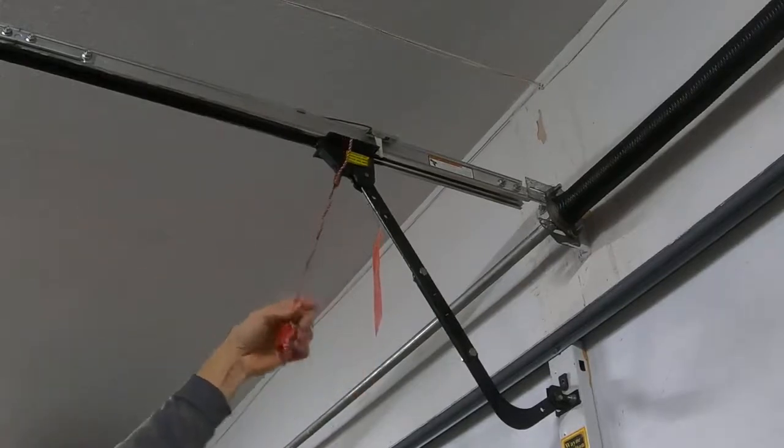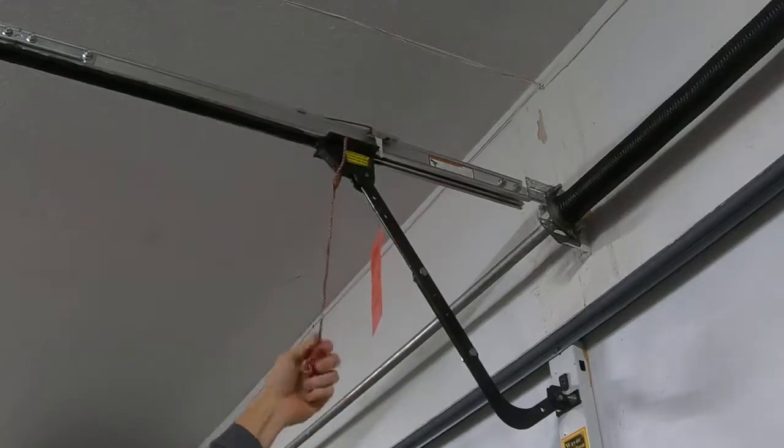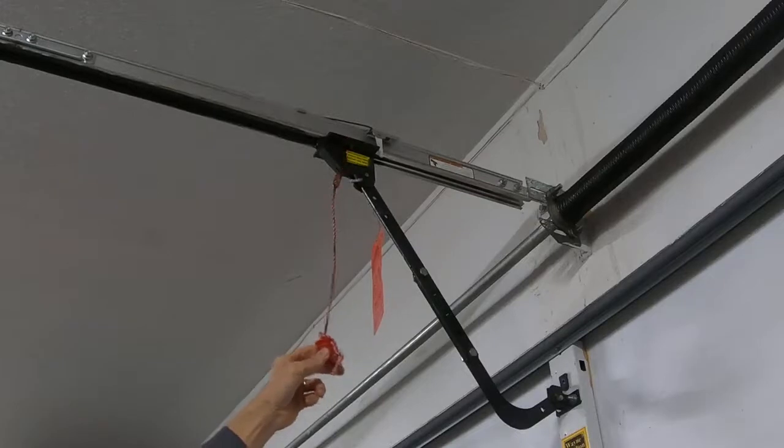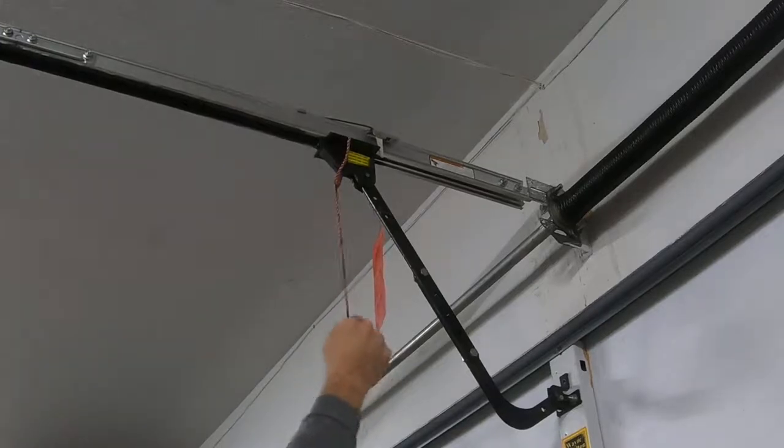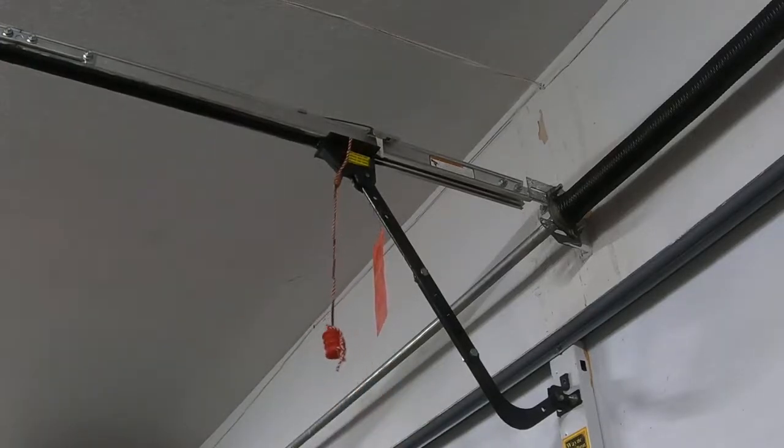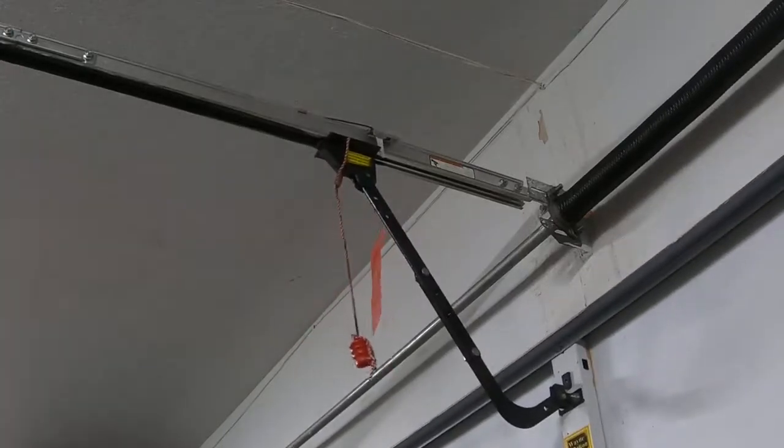Some have a belt, but it works the same way. In order to disengage it, you just pull this down. That's the emergency release. If your power is out and you need to get out of your garage, you pull this down and that allows the garage door to be lifted manually.